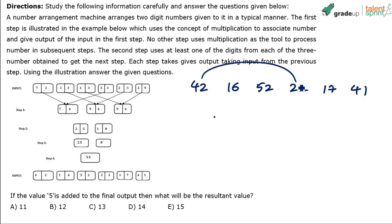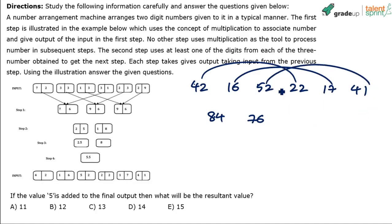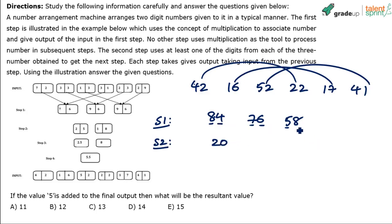For step 1: 42 and 22 — multiply 4 by 2 to get 8, and 2 by 2 to get 4, giving 84. Then 16 and 17 — multiply 1 by 7 to get 7, and 6 by 1 to get 6, giving 76. Then 52 and 41 — multiply 5 by 1 to get 5, and 2 by 4 to get 8, giving 58. For step 2: add the tens places — 8 plus 7 plus 5 equals 20. Add the units places — 4 plus 6 plus 8 equals 18.